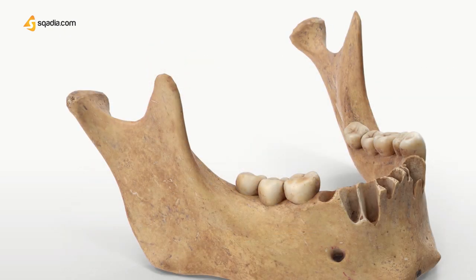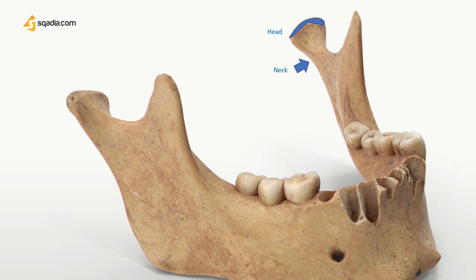Looking from the medial side, the condyloid process has a head and a constriction below it called the neck. This structure is the common site of mandibular fractures, which may occur from falling on your chin. The head is covered with fibrocartilage and articulates with the temporal bone to form the temporomandibular joint — where the mandible attaches to the skull, providing movement during talking or chewing. Its anterior surface presents a depression called the pterygoid fovea, where the pterygoid muscle attaches.